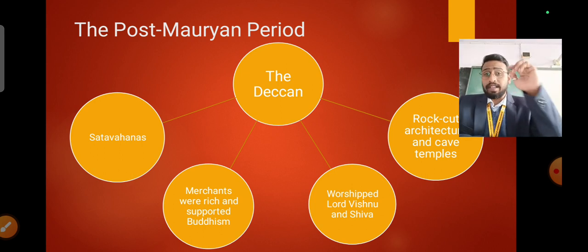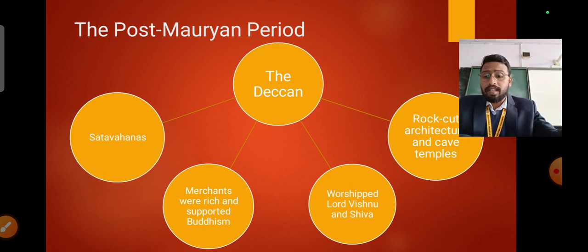The Satavahana rulers were basically the worshippers of Lord Vishnu and Shiva and they patronized rock cut architecture and cave temples that we see in the Deccan.